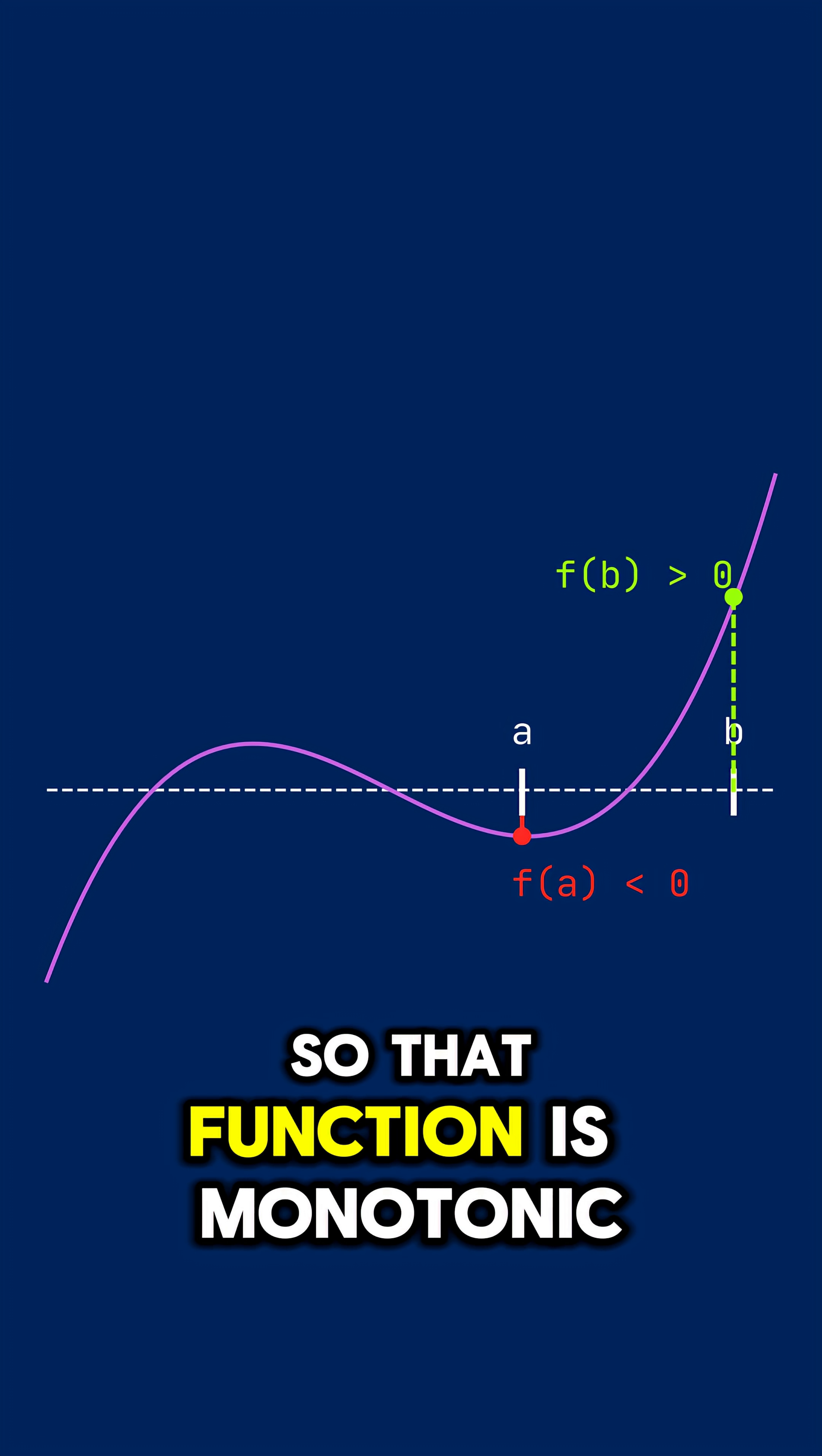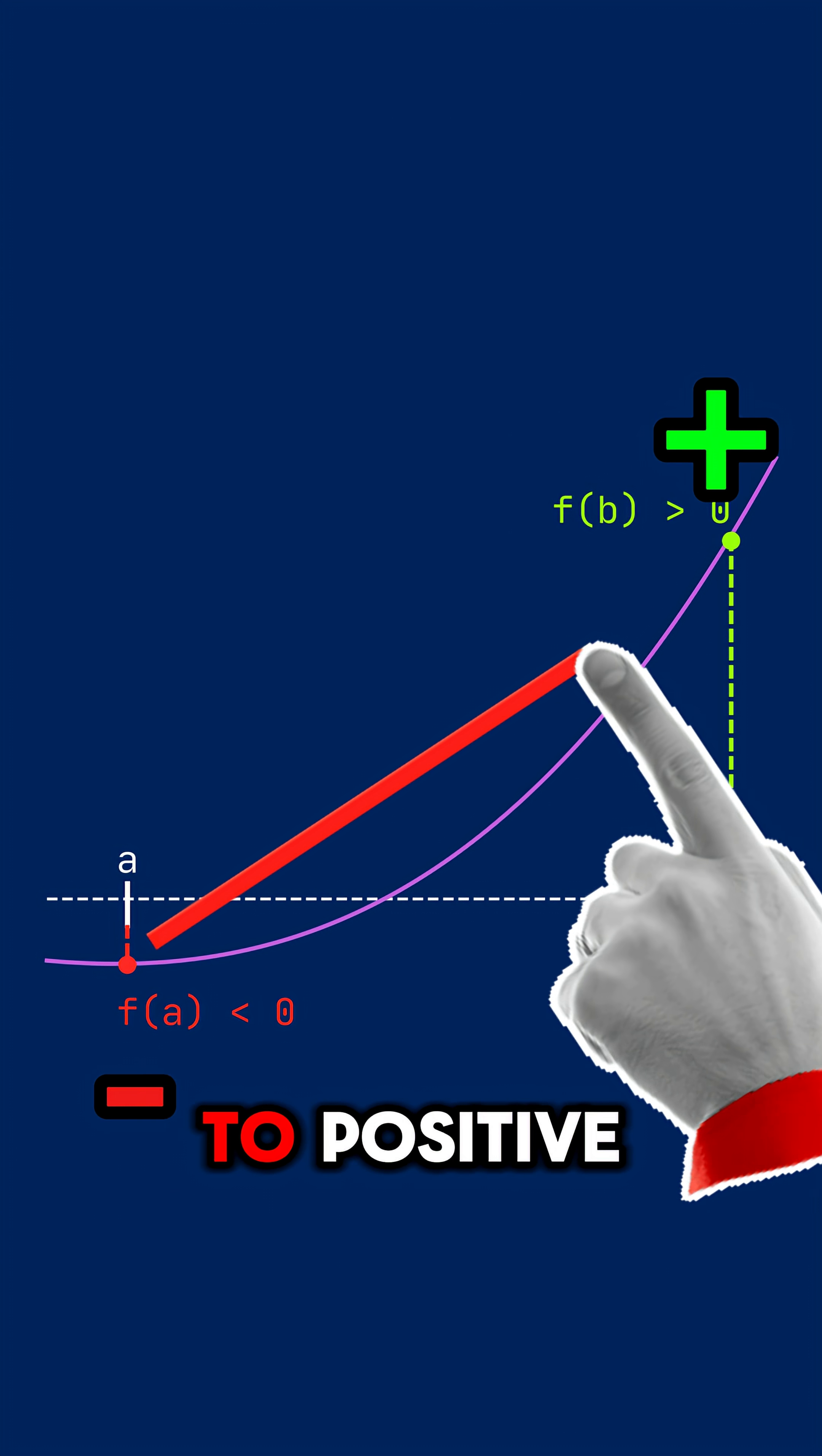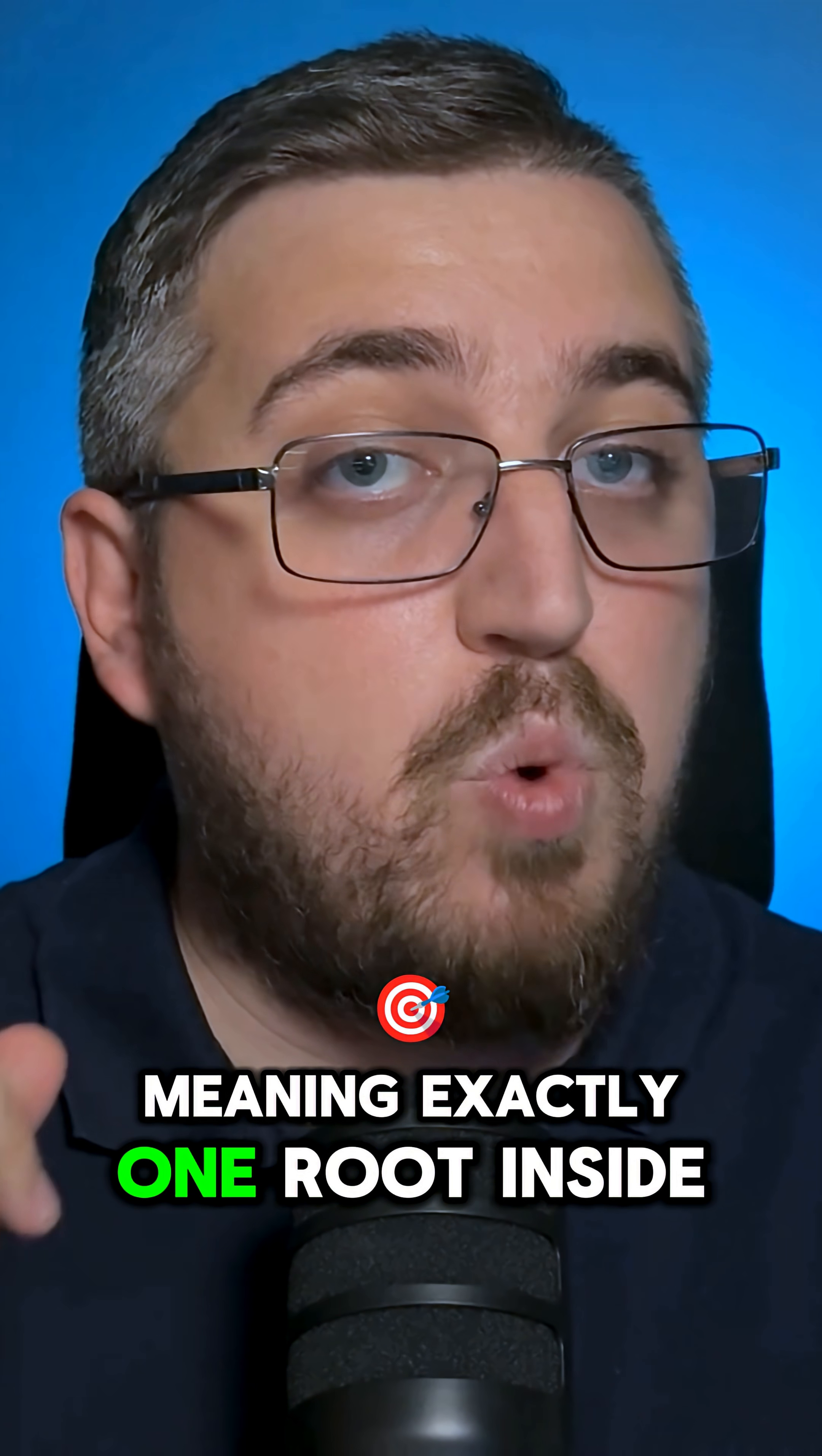Even better if you choose A and B so that the function is monotonic in between. That way you know there is exactly one transition from negative to positive, meaning exactly one root inside.